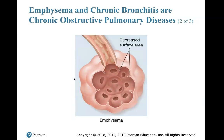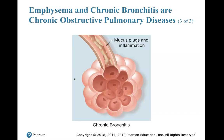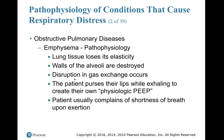So there are two different things. It's always good to ask your patient — when they say they have COPD, you need to ask: do you have chronic bronchitis or emphysema? Emphysema pathophysiology: lung tissue loses its elasticity, walls of the alveoli are destroyed, disruption in gas exchange occurs. The patient purses their lips while exhaling to create their own physiologic PEEP — they put their lips together as they're blowing, which backs up the air into the lungs and tries to open up the alveoli. They do it subconsciously. A patient usually complains of shortness of breath upon exertion.